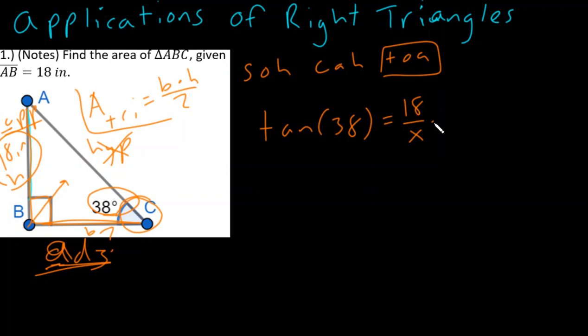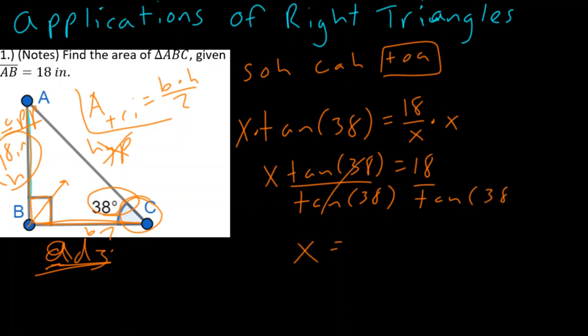We know that since it's being divided by x, we'll multiply both sides by x. Now I have x tangent of 38 is equal to 18. And how do we get rid of the tangent of 38? Well, I simply divide both sides by the tangent of 38. Those cancel, and I get this.